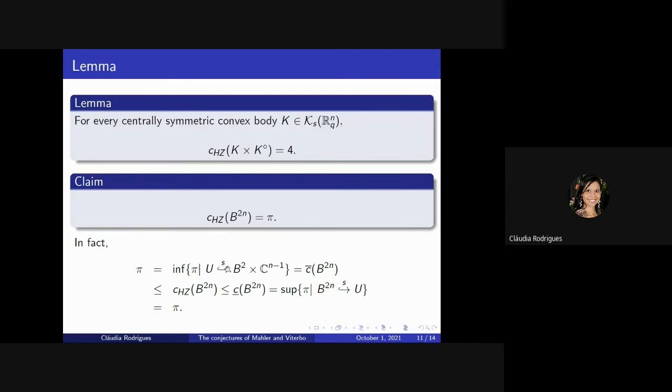In fact, pi is the infimum of pi, right? With these properties. And this is the smallest capacity of all. In particular, it is smaller than C-HZ, which is the same, is smaller than the largest of all capacities. As the radius is one, so it is equal to supremum of the pi constants, and it is pi. So, we get the claim.